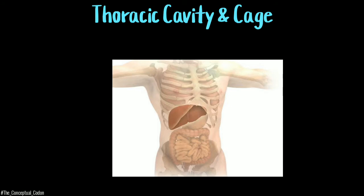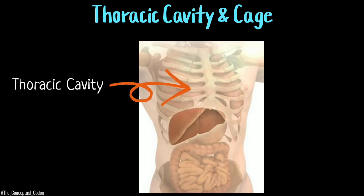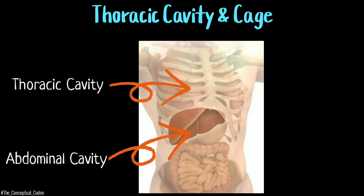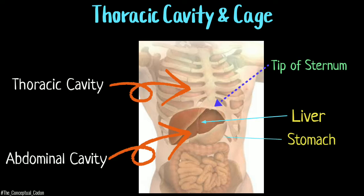Thoracic cavity and thoracic cage are two different things. The thoracic cavity occupies only the upper part of the thoracic cage, while the abdominal cavity reaches as high as the tip of the sternum. It is designed this way to protect the vital abdominal organs like the liver, stomach, spleen, and kidneys.